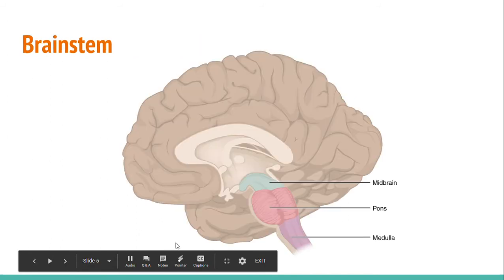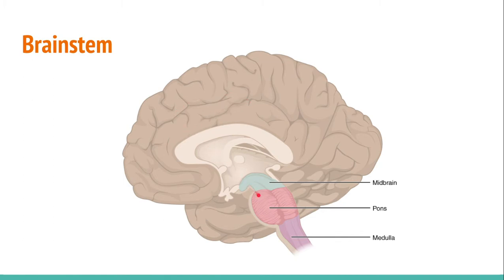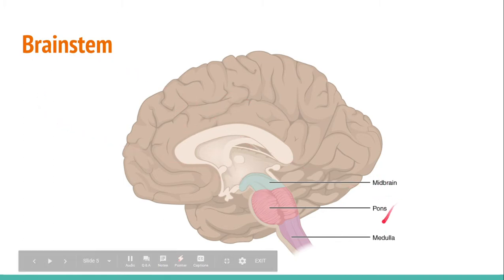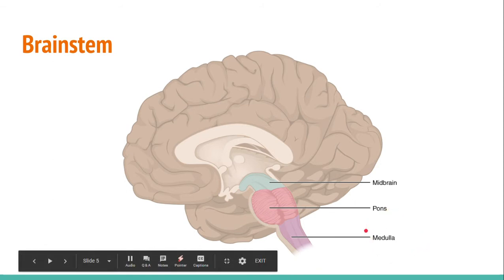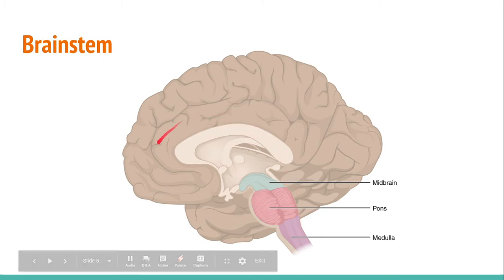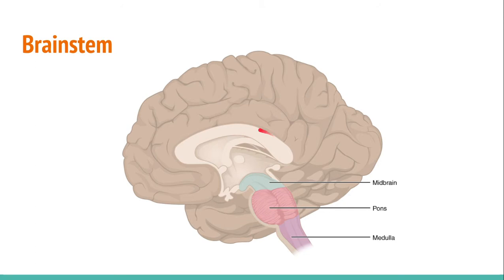Now I'm going to talk about the brainstem. The brainstem consists of the midbrain, the pons, and the medulla. The brainstem is found under the limbic system, which is the forebrain, and is responsible for vital functions such as breathing, heartbeat, and blood pressure. Basically, the brainstem is responsible for things you don't directly tell your brain to do — your brain just does them automatically.